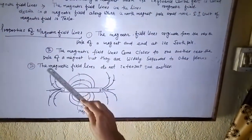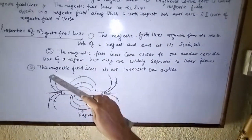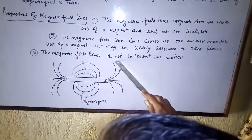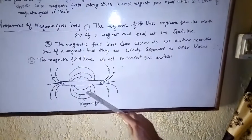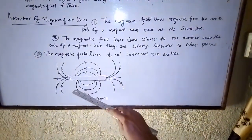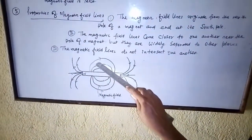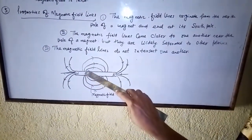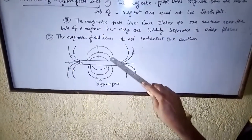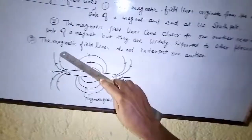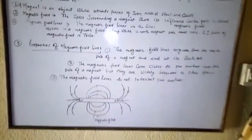The third property is that magnetic field lines do not intersect one another. We can see that no magnetic field lines cross or intersect each other. This states the third property of magnetic field lines.